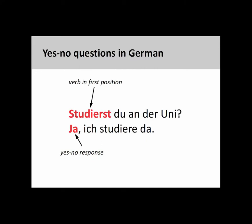Any conjugated verb can appear in the first position, not just some form of sein. For example, in the sentence you see on the screen, 'Studierst du an der Uni?' — Do you study at the university? — a second-person singular form of studieren is in the first position, which creates subject-verb agreement with the subject du, the second-person singular personal pronoun. The question is answered with an affirmative ja, with additional information being volunteered: 'Ich studiere da' — I study there.